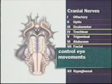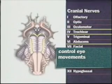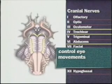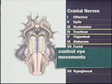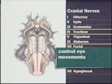Cranial nerves 3, 4, and 6 — the oculomotor, trochlear, and abducens nerves — control eye movements. Because these nerves work together so closely, they're examined as a group.